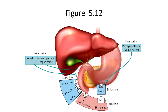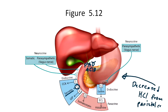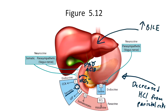Here again is figure 5.12. When fat or acid enter the lumen, the S cells release secretin. Secretin travels through the blood to decrease the acidity of the chyme so pancreatic enzymes can function better. Secretin does this by decreasing acid production from the parietal cells of the stomach, increasing bicarb secretion from the pancreas to neutralize acid coming into the duodenum, and acting on the liver to increase bile production. In summary, secretin decreases acidity by decreasing acid production and releasing bicarb.